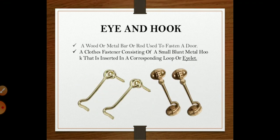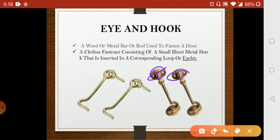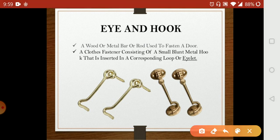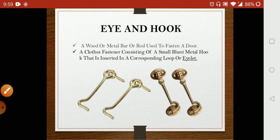The next is the eye and hook. You can see here the eye and hook — the shape of this is just like an eye, and this part is the hook. It is a wood or metal bar or rod used to fasten a door. Also used as a clothing fastener, consisting of a small blunt metal hook that is inserted in a corresponding loop or eyelet. This is also one type of bolt — eye and hook.